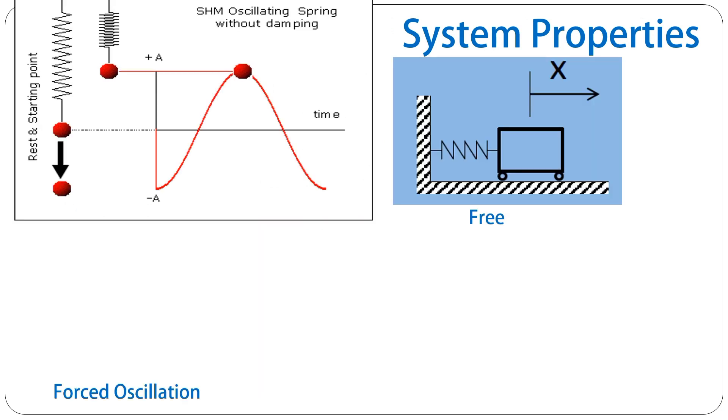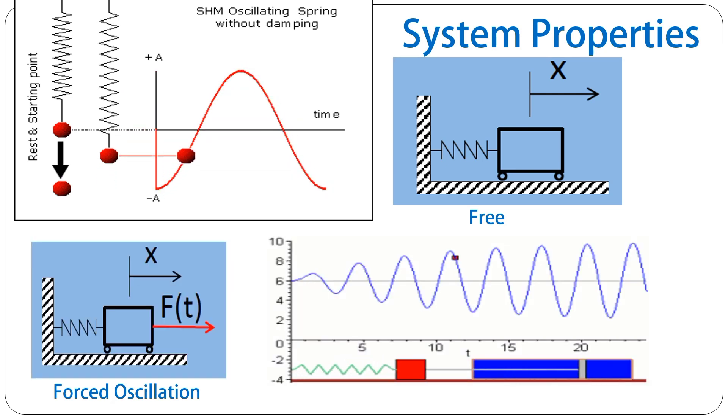The next differentiation is whether the system is free, or we have forced oscillation. So again, this is the original system that we were talking about already, and now additionally, we have a force acting on the mass. And of course, the type of the force that we are using here will have an influence on the motion behavior of the system.